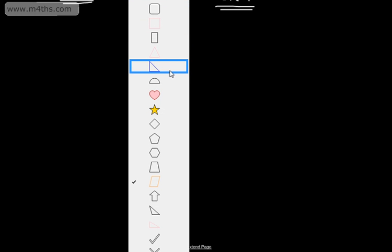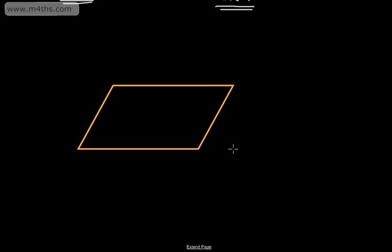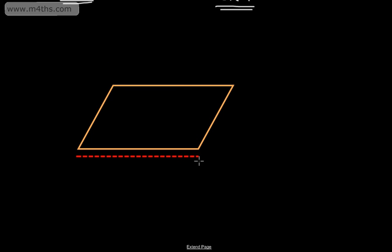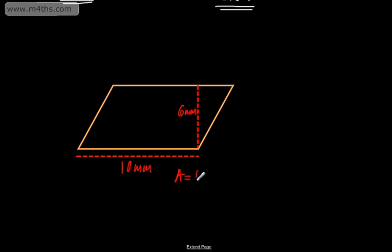Let's work through a few examples. Here's a parallelogram where you might be given a perpendicular height line marked on it. Let's say the base is ten millimeters and the perpendicular height is six millimeters. The area is simply ten times six, or six times ten, which gives us sixty millimeters squared. It really is that straightforward.